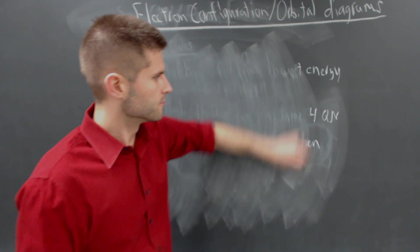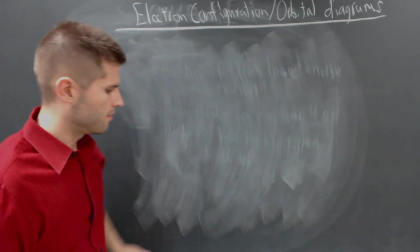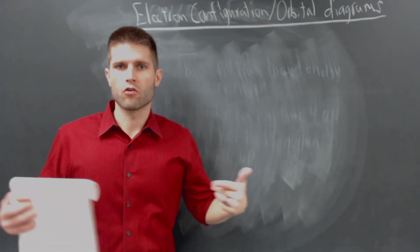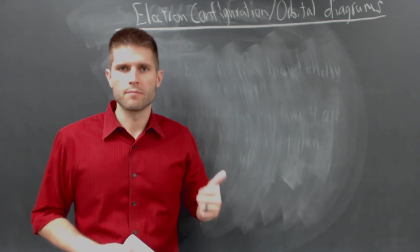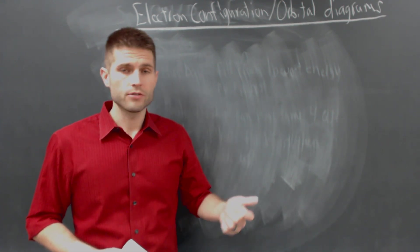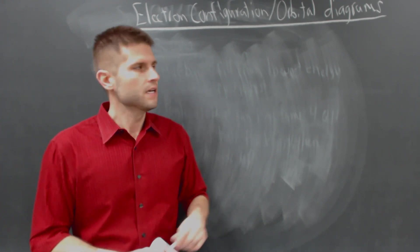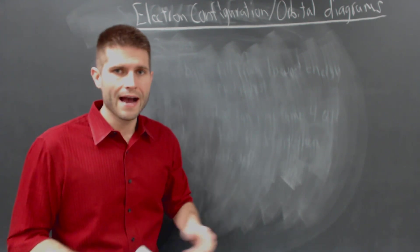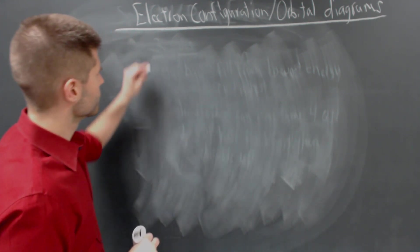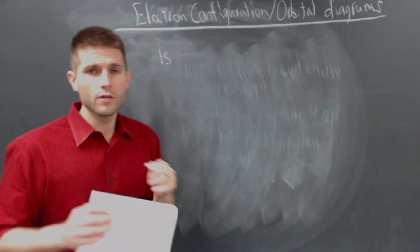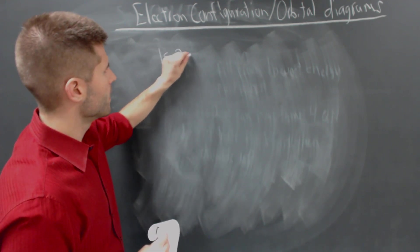The Aufbau Principle tells us which orbitals are the lowest in energy and which are higher in energy. We know that energy increases as the principal quantum number increases, and we also know that energy increases as the angular momentum quantum number increases. So using Aufbau's Principle, we can write out an order of our orbitals. We start with the 1s — this is our lowest energy orbital. The next lowest energy is going to be your 2s.